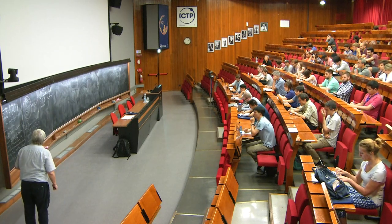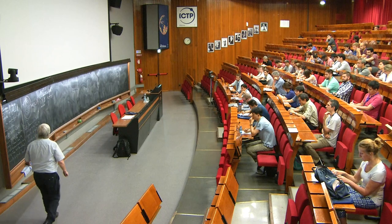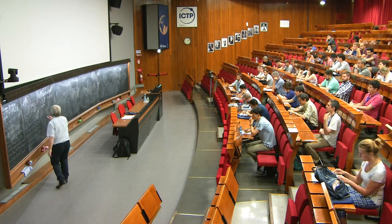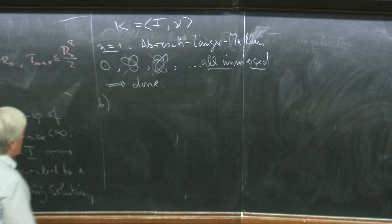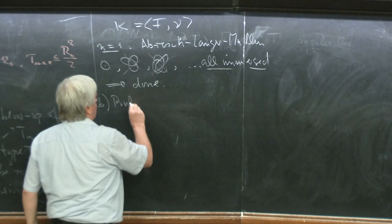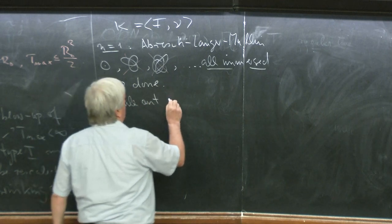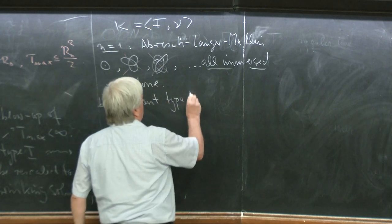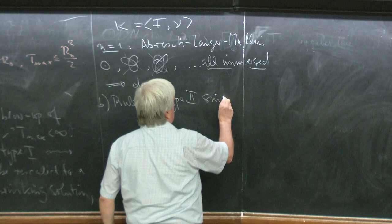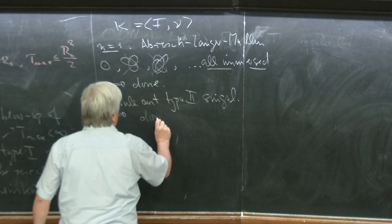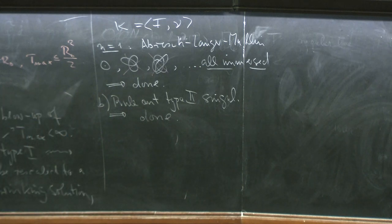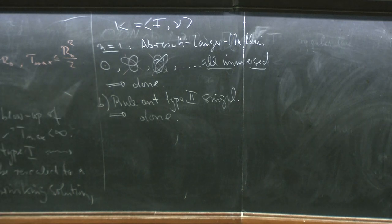All we have to do now is rule out that there is no type 2 singularity. Step B: we have to rule out type 2 singularities, and then we are done. Because if this cannot happen, then it must have been case A — it is the circle, and we are done. That's the structure of the proof.